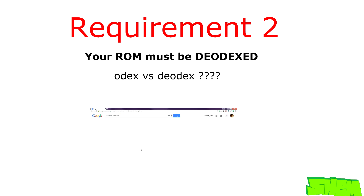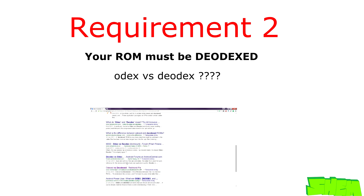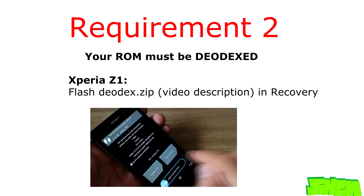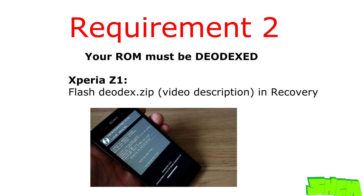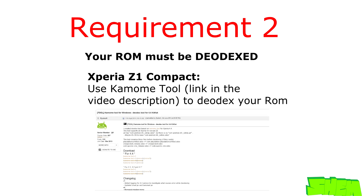The second requirement is that your ROM must be deodexed. If you don't understand what odex versus deodex means, just Google it for the answer. On Xperia Z1, deodexing the ROM is done by simply flashing a prepared zip file in recovery. To deodex the Z1 Compact, you will need to use a Cyanome tool. There is a link to the XDA Developers thread with instructions in the video description.